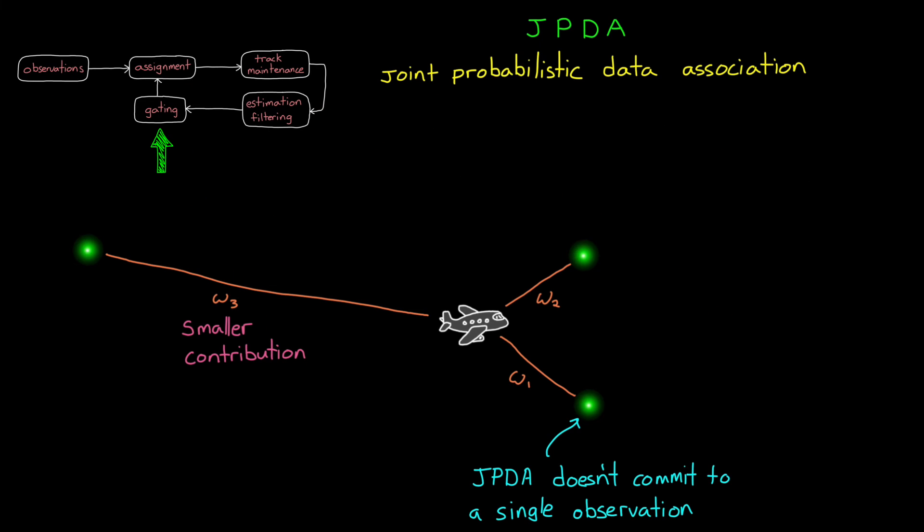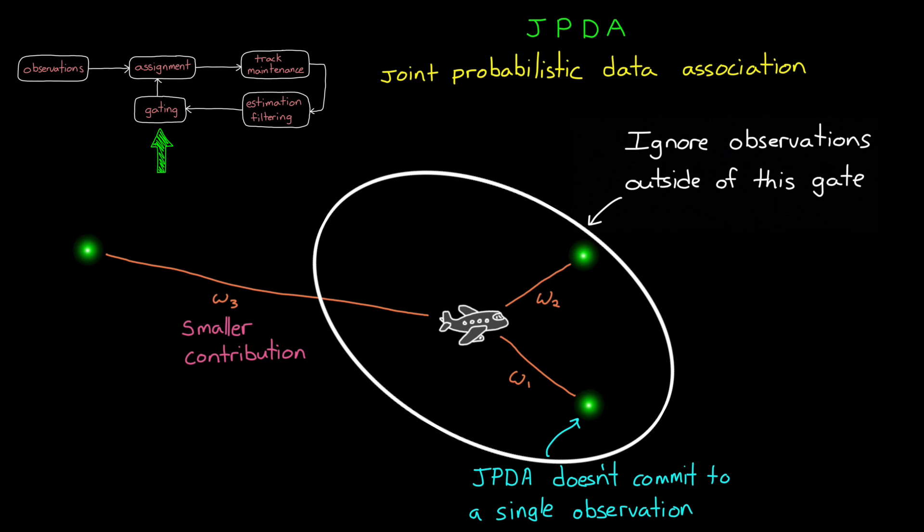For example, with JPDA, an observation that's really far away from the tracked object would statistically contribute very little to the overall solution. So why spin the computational resources to even calculate this minuscule amount? And this is especially true if you're tracking dozens or hundreds of objects. This could be extremely wasteful. But by ignoring observations outside of a specific region, outside of this gate, we can speed up the assignment process.